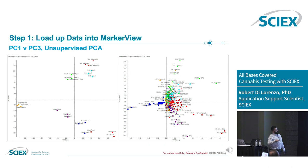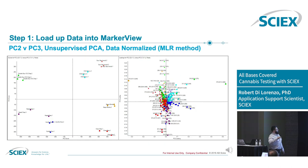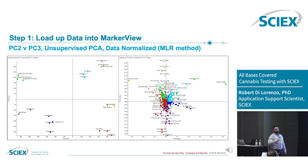Then you can look at the differentiating features. In this PC1 loading region, this is really differentiating the Negra Bonita and the Nepal strains. You can look at features that are differentiating these particular strains and look at multiple different PCA loading plot levels.